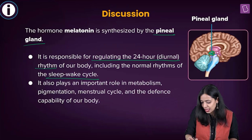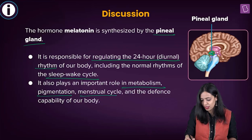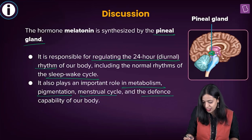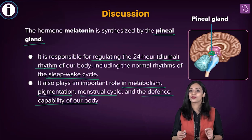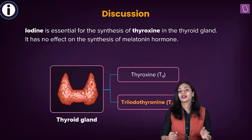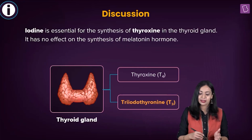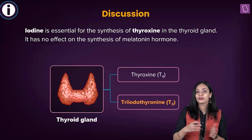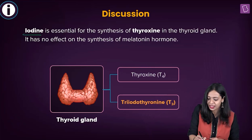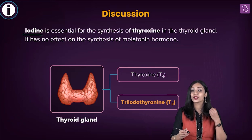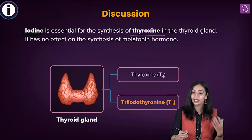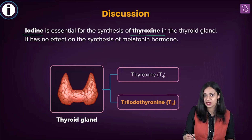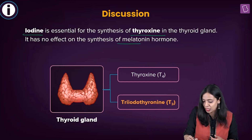Apart from regulating the sleep-wake cycle, melatonin has various other roles: it is involved in metabolism, pigmentation, the menstrual cycle, and also plays a role in the defense capability of our body. What is not correct about melatonin is the need for iodine for its synthesis. Iodine is important in our diet because it is essential for the synthesis of thyroid hormones like thyroxine — but iodine deficiency plays no role in melatonin synthesis.